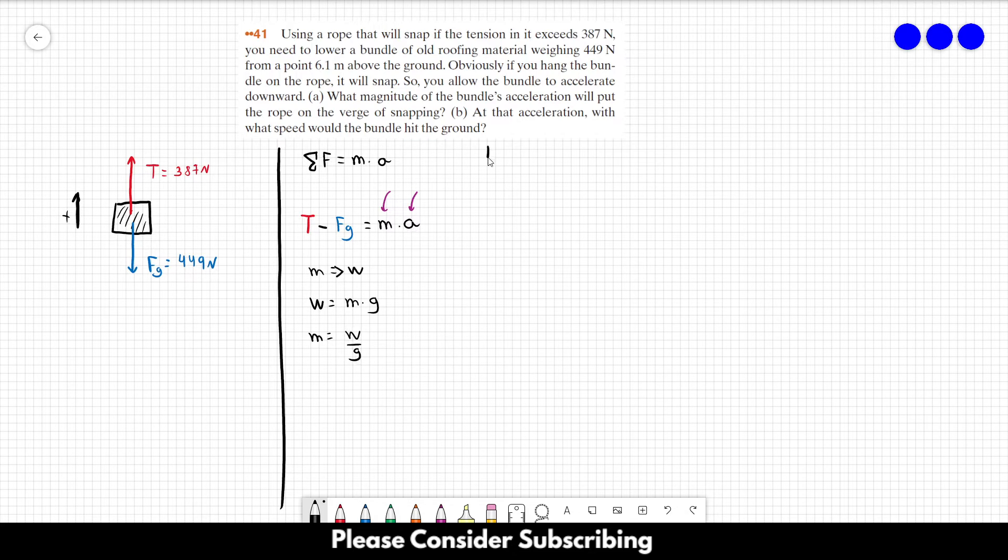So now we can rewrite this equation like this. T minus Fg is equal to the weight over G. The weight is the same as the force of gravity. So we can replace W by Fg times the acceleration. So the acceleration is equal to G over Fg times T minus Fg.